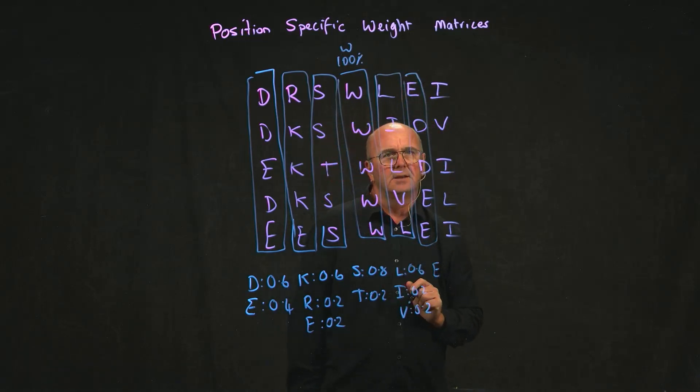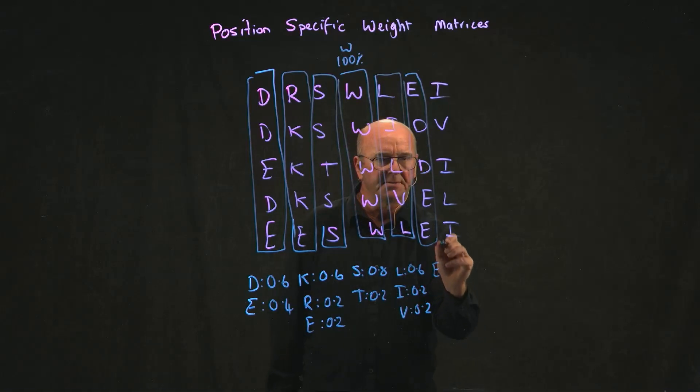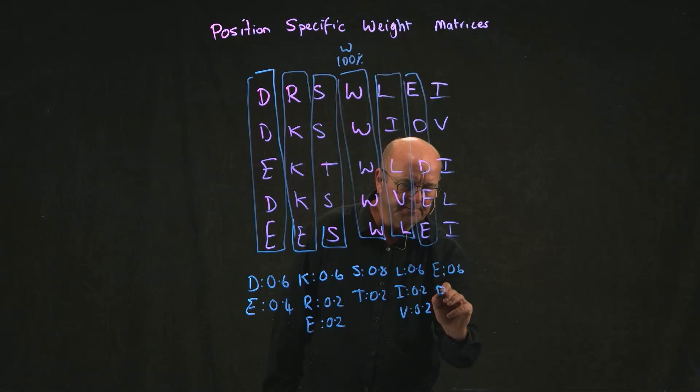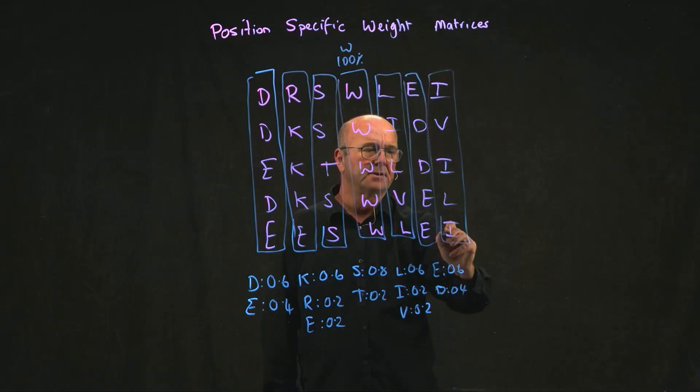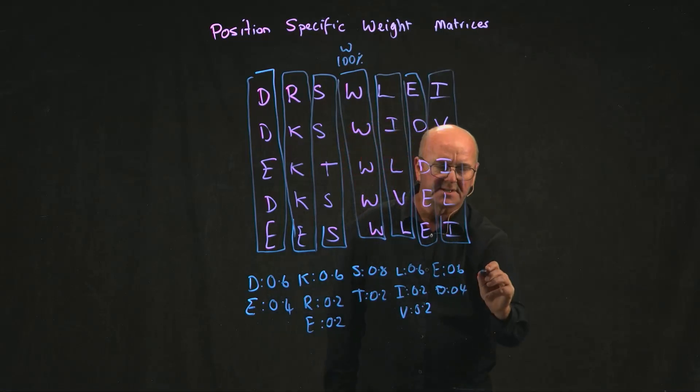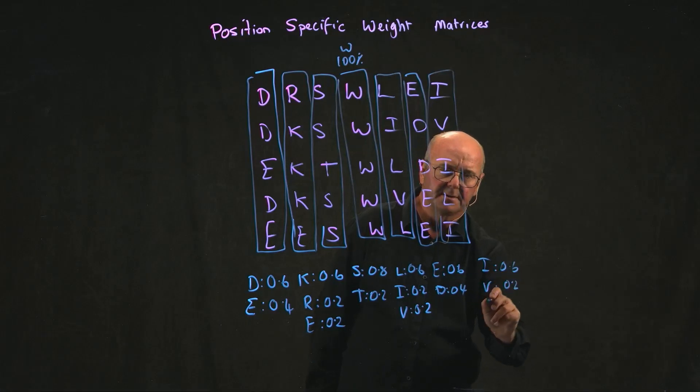At the penultimate position, we have 0.6 E and 0.4 D. And then at the last position, we have 0.6 I, 0.2 V, and 0.2 L.